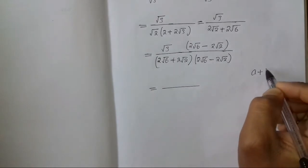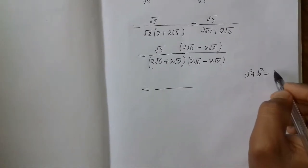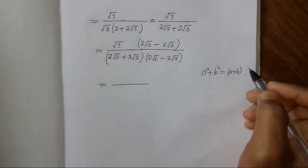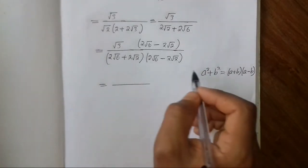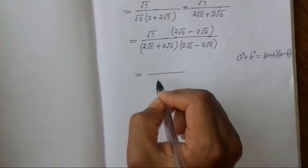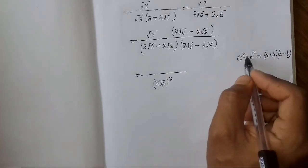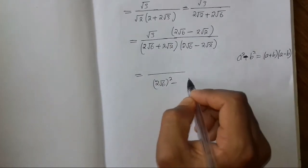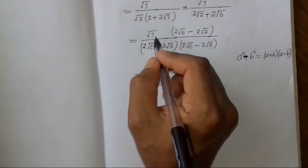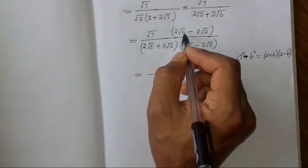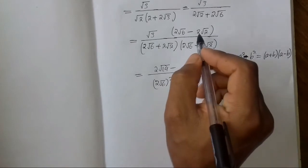We can use a plus b squared by a squared, and we can use a plus b squared by a minus b. This gives us: 2 root 6, square root 3, 2 root 3, root 6, 2 root 2, and then 3 times 19 minus 12.